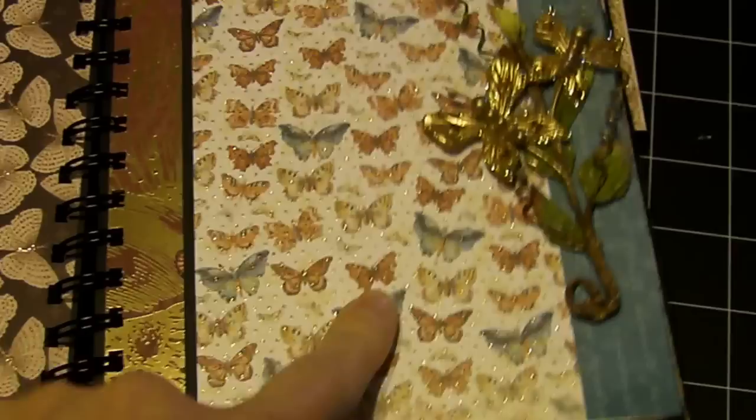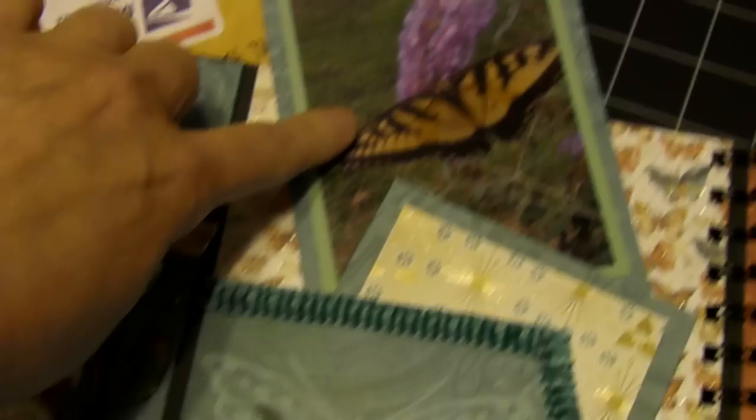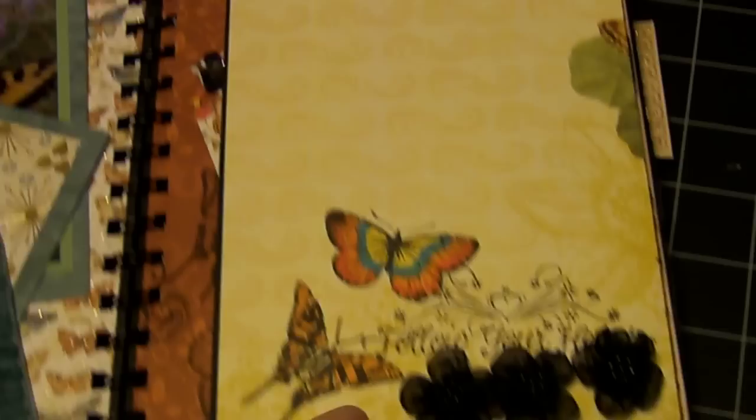And then this is this page, and of course you can flip it out this way also. This is another pocket, and I put two cards in there. I actually put one of my photographs on this one for her, of a butterfly I had taken out in my yard.